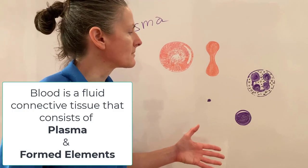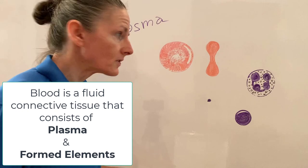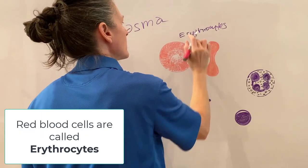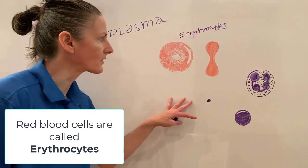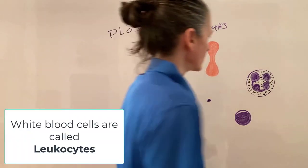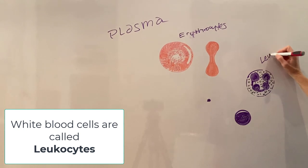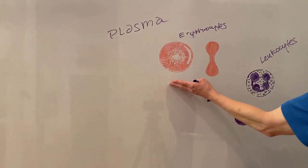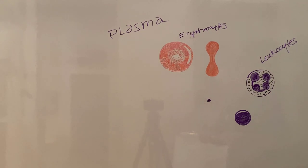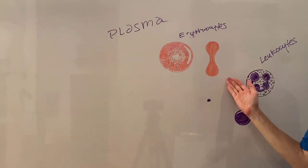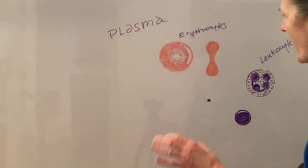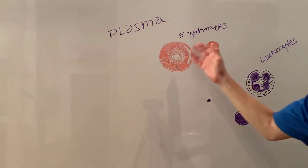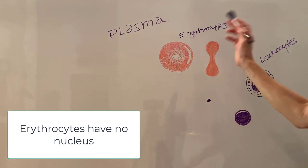We have the formed elements, and the formed elements consist of red blood cells, which we call erythrocytes. We also have white blood cells, called leukocytes. Red blood cells are specialized for the transport of oxygen and have a very specialized shape — notably, they have no nucleus. This is very important: erythrocytes have no nucleus.